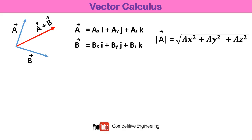To find the unit vector in the direction of a given vector, first find the magnitude of the vector, then divide each component — Ax, Ay, and Az — by that magnitude. This gives the components of the unit vector in the direction of A. We will understand this concept better when solving problems; in this video I am just covering the basic equations and concepts.